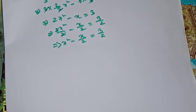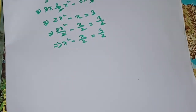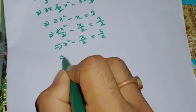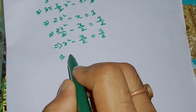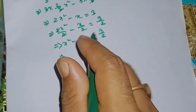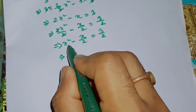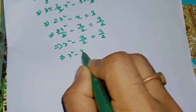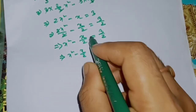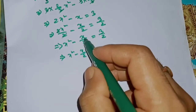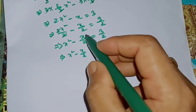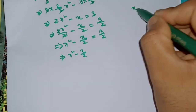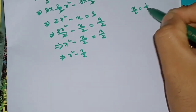Now we have to write the direction, which is from the middle of the order of x² minus x by 2. Now we have x, to be able to make x by 2.